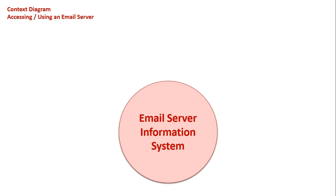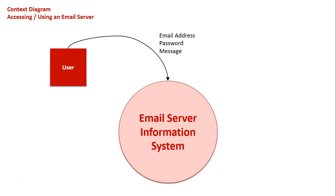Next, we think about our external entities. One external entity we're sure of is the user themselves, and they're going to be wanting to access the email server. The things they put into the email server — represented with a flow line — include their email address and password to get into the email server, and then they can begin typing up a message.